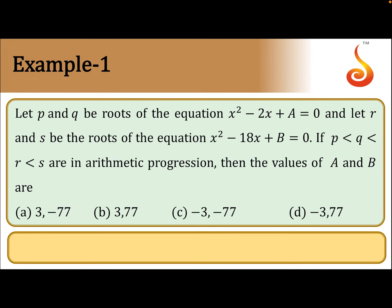Example 1. Let p and q be the roots of the equation x² - 2x + a = 0, and let r, s be the roots of the second equation. If p < q < r < s are in arithmetic progression, then find the values of a and b.